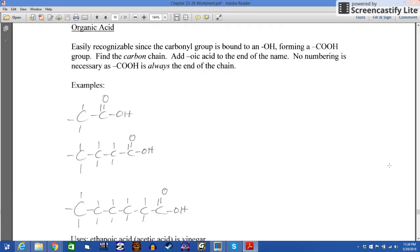And now, as we move down, halfway down page 19, we have organic acids. Those are very easily recognizable, since the carbonyl group is bound to an OH, forming a COOH. The COOH is like, here's the example, COOH. COOH in the condensed structural formula. And we call that a carboxyl group. Find the carbon chain, add oic acid to the end of the name. Again, drop the E as usual. No numbering is necessary, because the COOH is the end of a chain. There are two carbons. Once again, we count the carbonyl carbon. And therefore, we find the name of this acid, which is ethanoic acid, E-T-H-A-N-O-I-C acid, ethanoic acid, which is actually the stuff in vinegar.